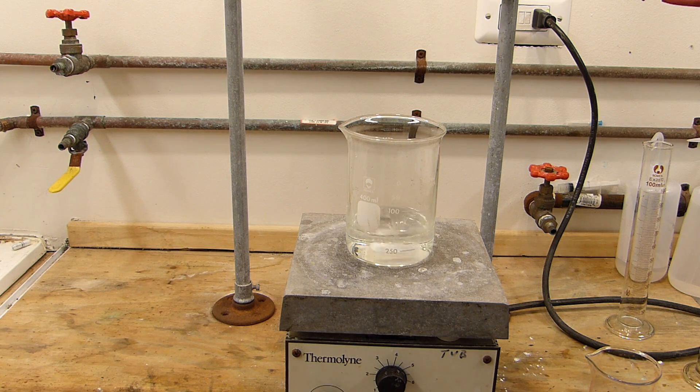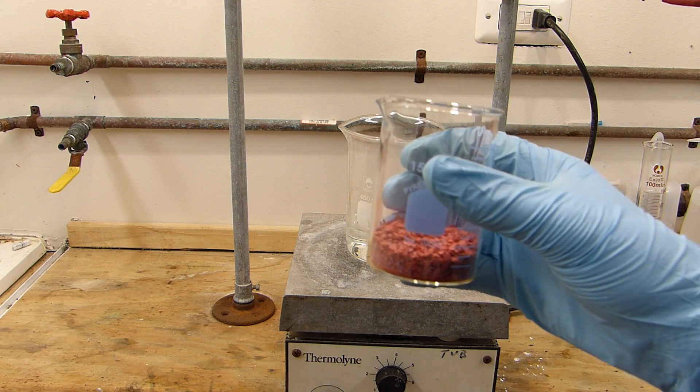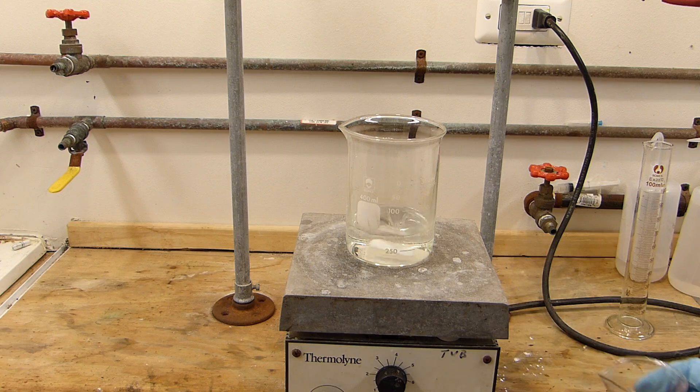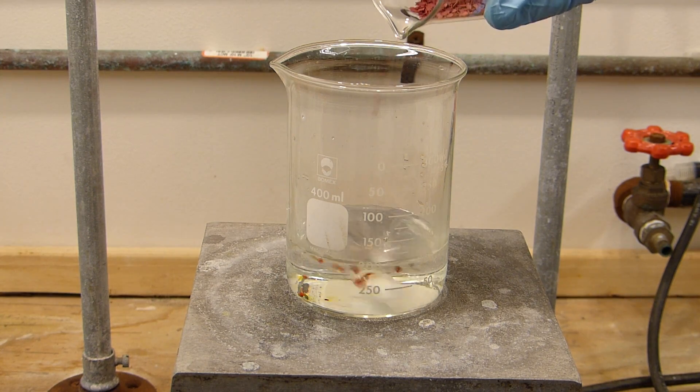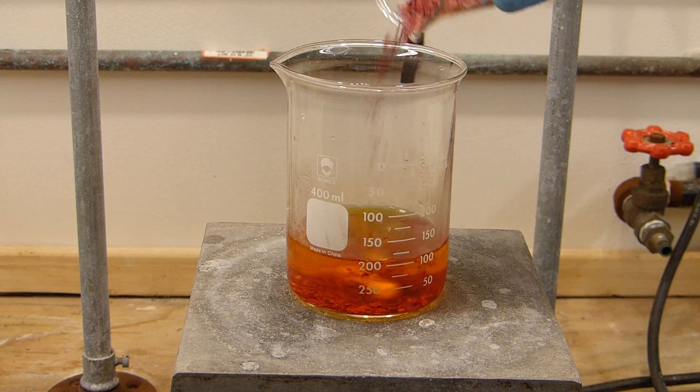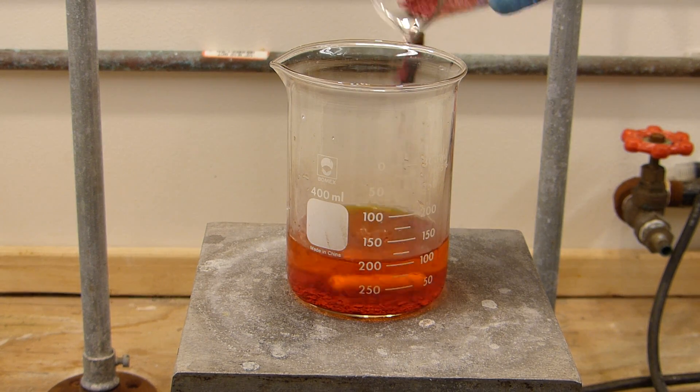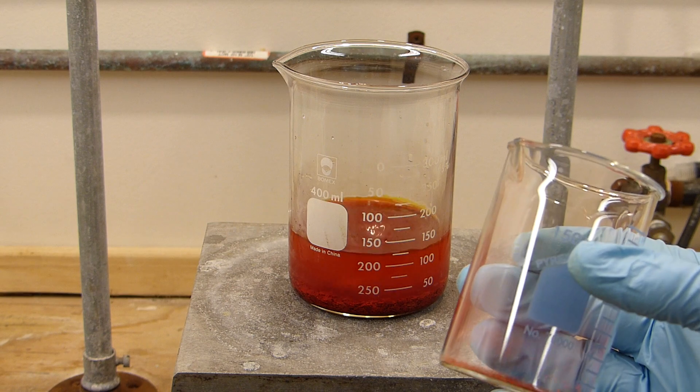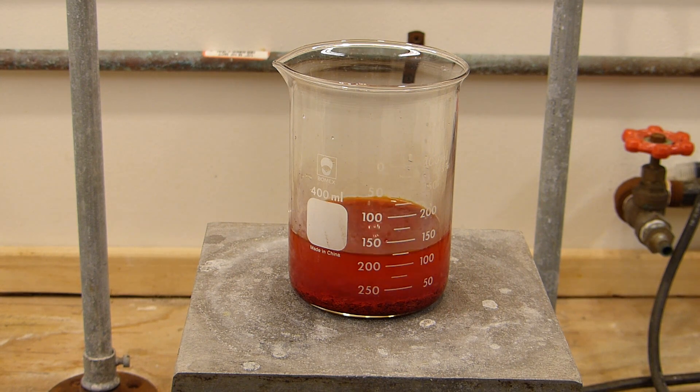Speed up the stirring a little bit and now I'm going to slowly add the chromium trioxide flakes. There we go. And I'll let that stir for a little while to make sure everything's completely dissolved.